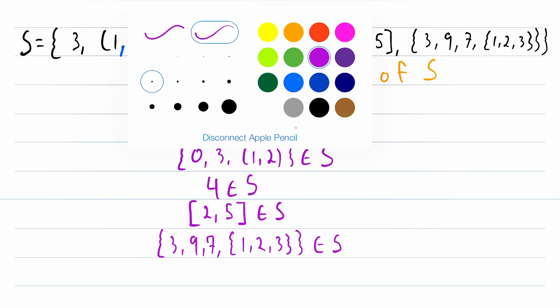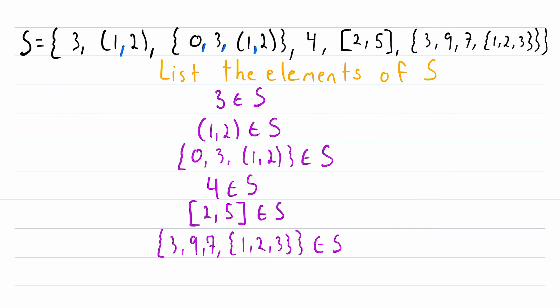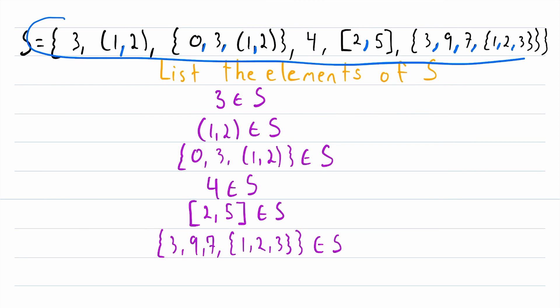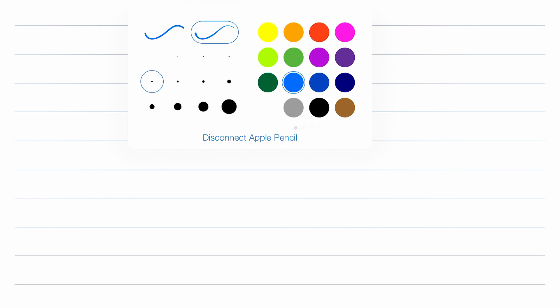A useful strategy here is comma color coding — making commas blue if they're not separating elements of the set, so that only black commas indicate element boundaries. You can see now that only the black commas are separating the elements of our set. Hopefully that has helped you understand how to identify the elements of a set in a trickier example — you really have to pay close attention to when an element starts and when it stops.